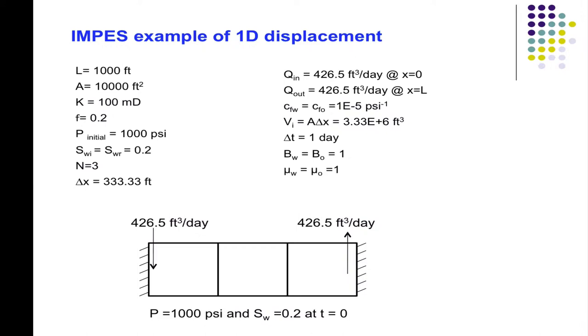Saturation of water is 0.2, pressure 1,000 at time equals 0. P initial is 1,000. This is just your standard material properties or fluid properties for water and oil. The only caveat is that here you're assuming that the formation volume factor of water and oil are both 1.